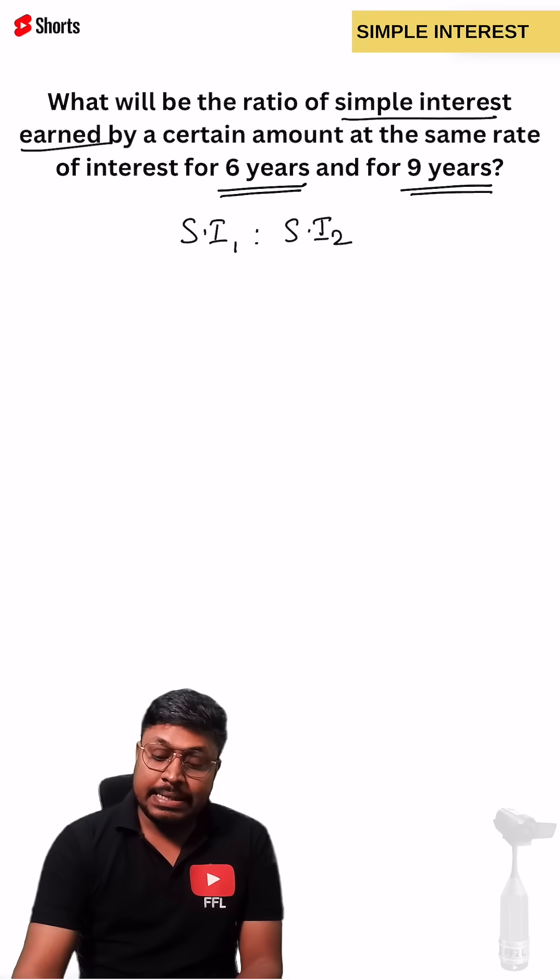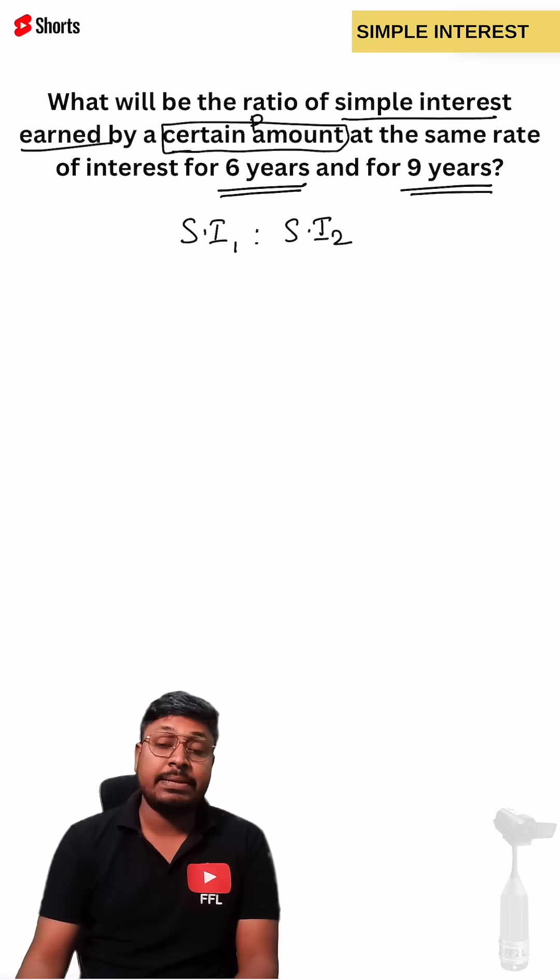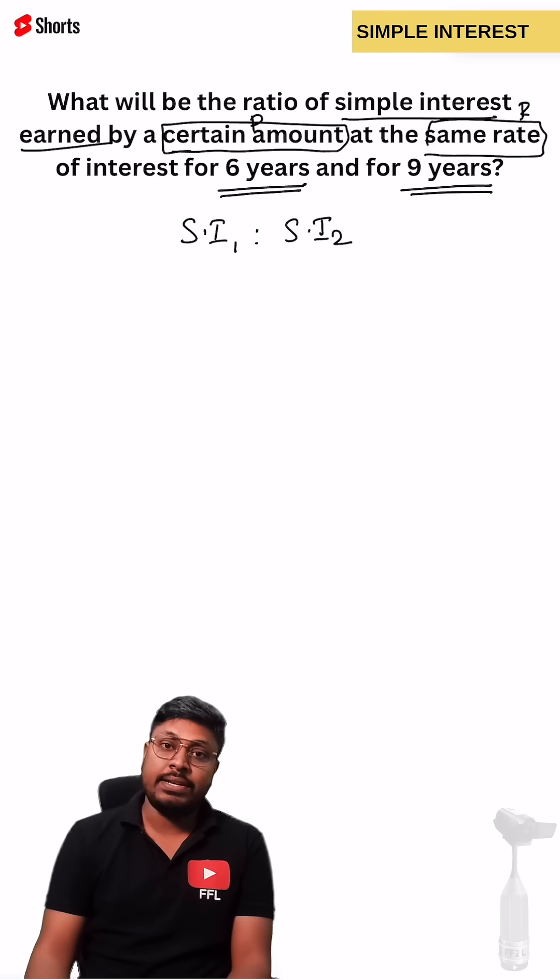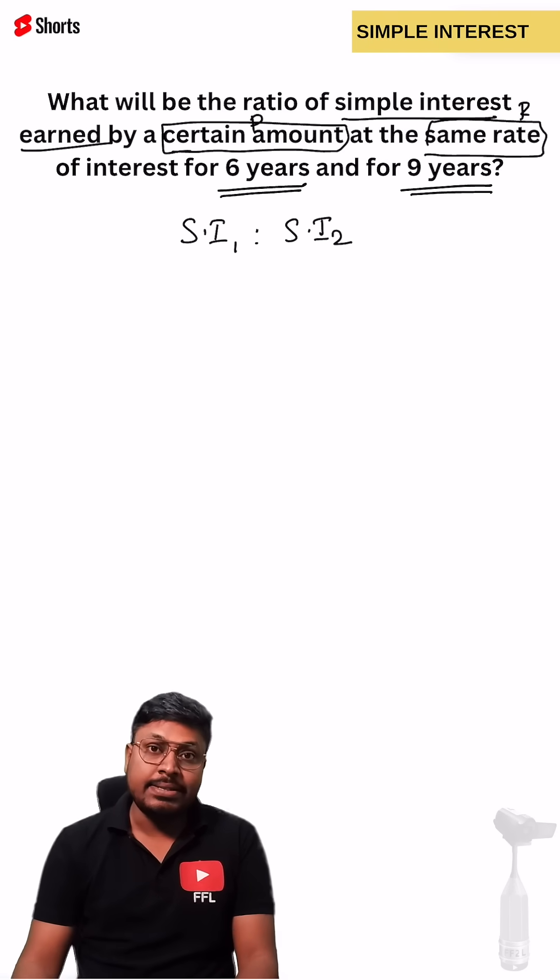According to the question, certain amount means the principal was not given. Let's assume P as the principal. Rate of interest is also not given, but they have given the same rate of interest. Let's assume the rate of interest as R.